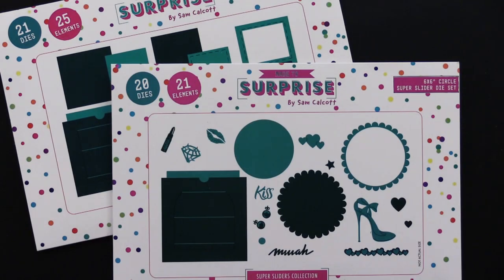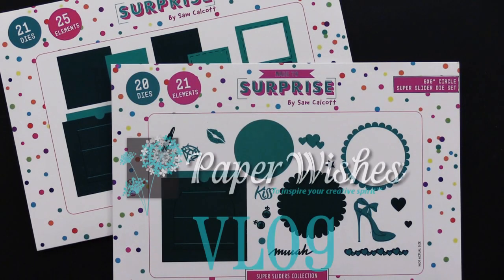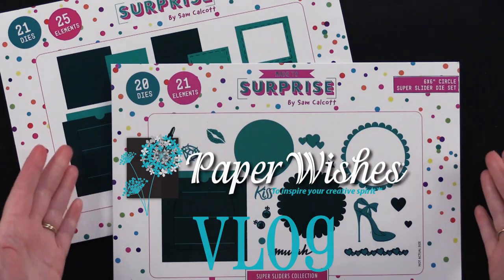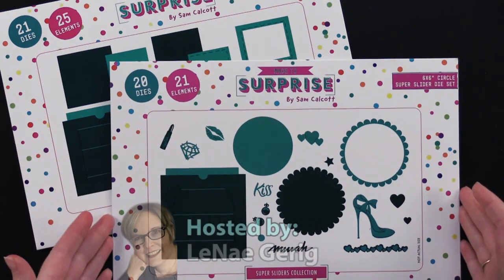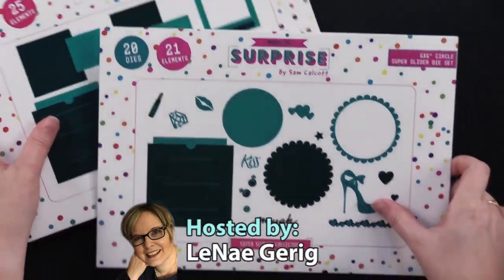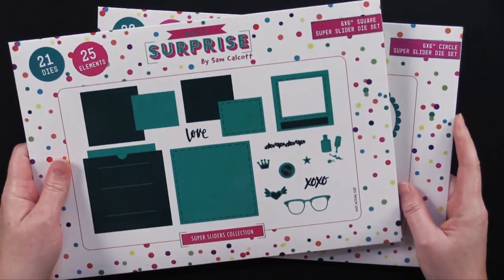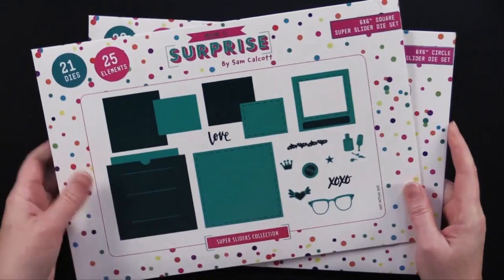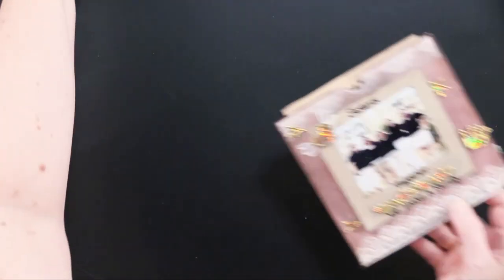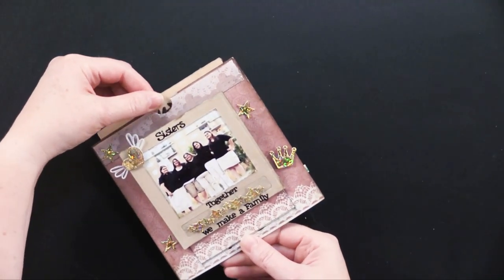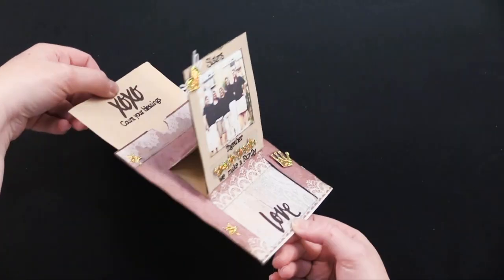Hi everybody and welcome to Paper Wishes Vlog. I'm Lene Gehrig and today I've got these great cutting dies from our friends at Made to Surprise. These are super sliders and I'm going to show you this one is the 6x6 circle and this one is the 6x6 square. They make these really cute kind of surprise slider cards.